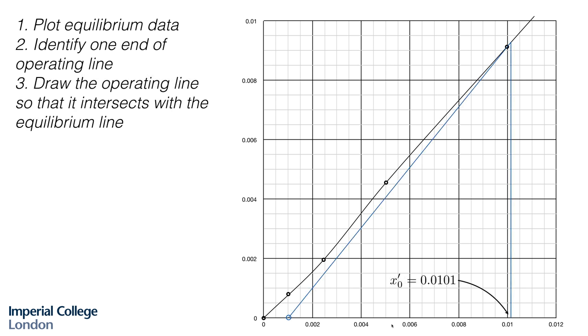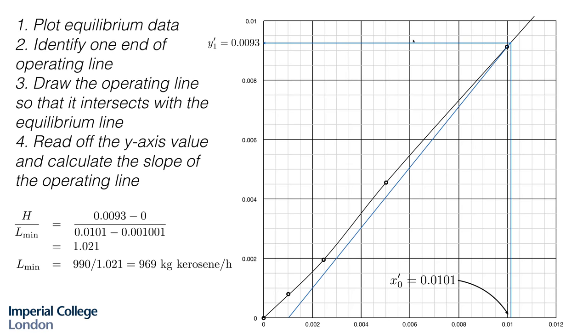Then we just draw our operating line going to a pinch condition at the other end. We know that this is our feed, our aqueous phase feed, 0.0101. So we construct that operating line to have its pinch point here, and then just read that off on the y-axis, which gives us the highest concentration of nicotine that we could have in the solvent if we had the minimum solvent flow rate and an infinite number of theoretical stages.